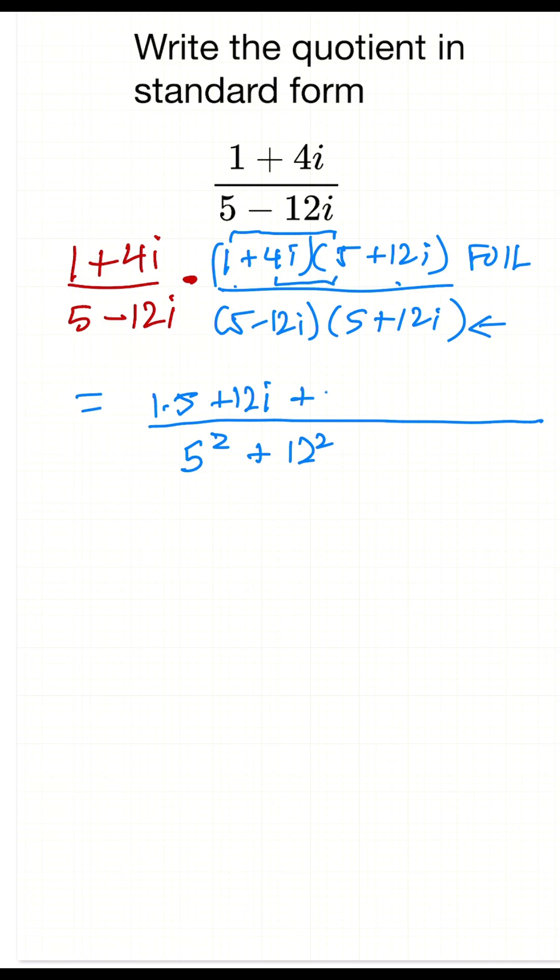And then the last is going to be 4i times 12i. So that's going to be plus 48i squared. All right, so let's continue on with this.